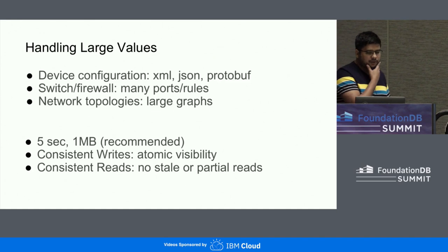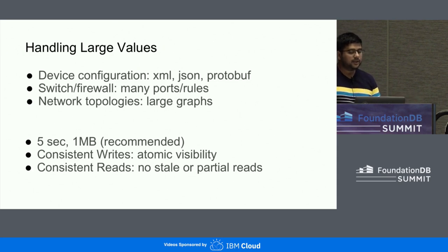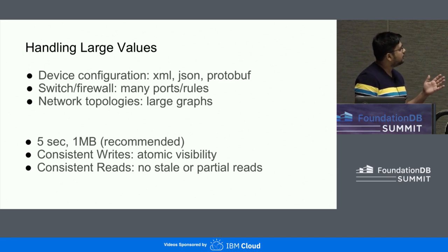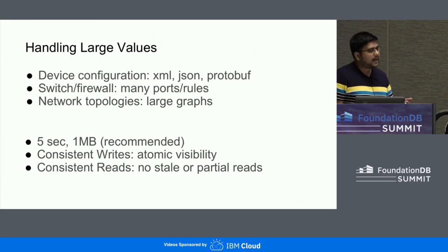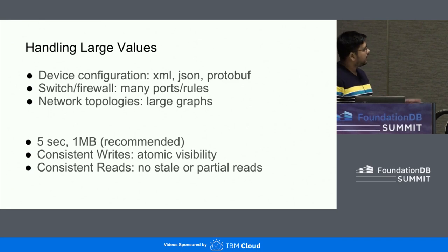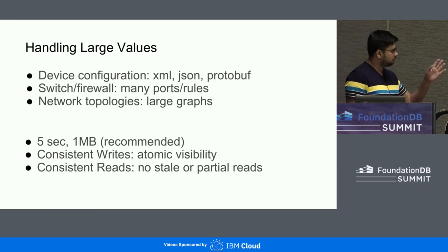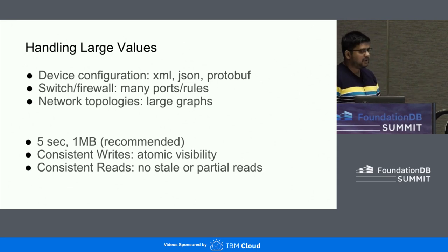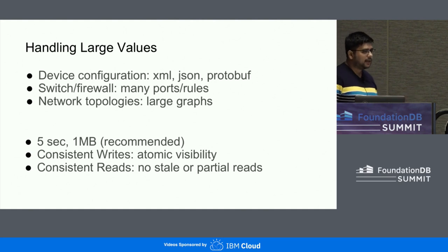Finally, I want to talk about handling large values. We get these large values in our system from device configurations collected from data centers — they come in XML, JSON, protobuf, and so on. Examples include large switches and firewalls with many ports and rules, and computer network topologies with hundreds of thousands of parts that tend to become large. FDB has transaction limits around both duration and size: it doesn't allow transactions to span more than five seconds, and while the documentation says 10 MB is the upper bound, the recommended size from the forums is close to 1 MB. But we still want to have consistent writes, atomic visibility, and consistent reads without any stale or partial data.